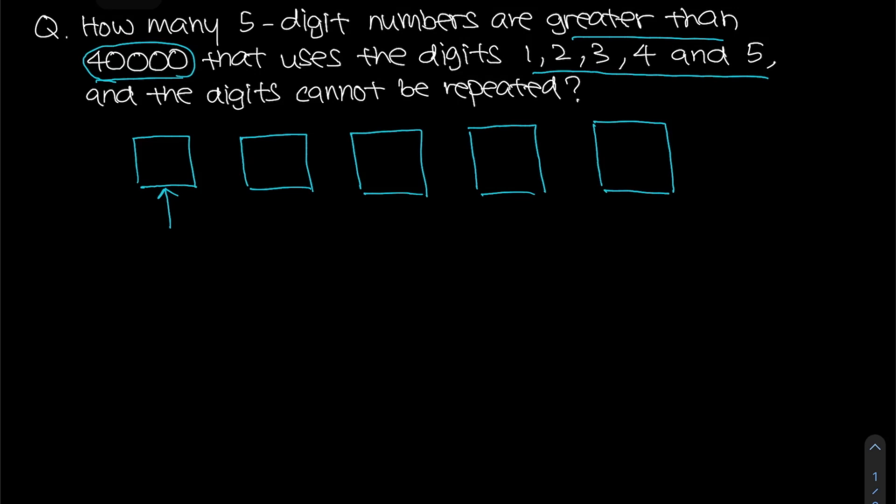Therefore we know that the first box can only have 2 ways. What are the two ways? It is actually either 4 or 5.